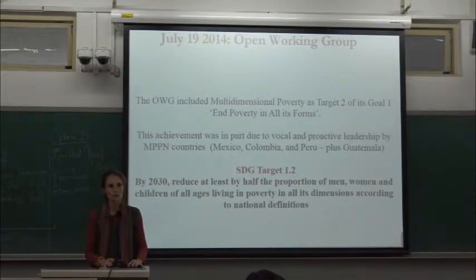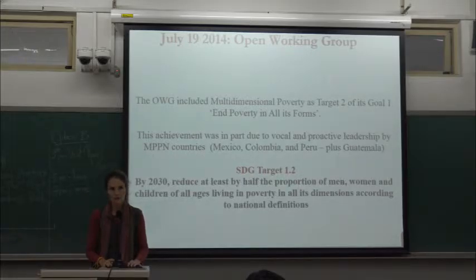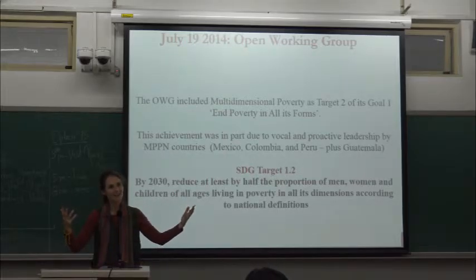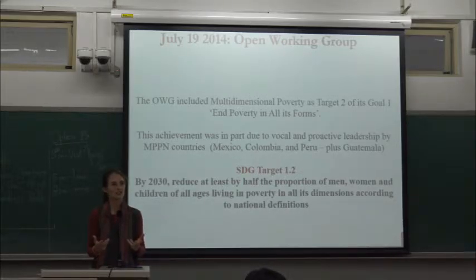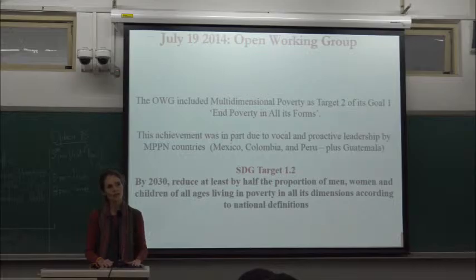The final wording put forward was: by 2030, to reduce at least by half the proportion of men, women, and children of all ages living in poverty in all its dimensions according to national definitions. That's an internally inconsistent phrase — reducing by half implies a comparable measure, whereas national definitions means every country could have its own definition. This ambiguous wording of goal 1.2 made it one of the more difficult targets to agree on an indicator set for.